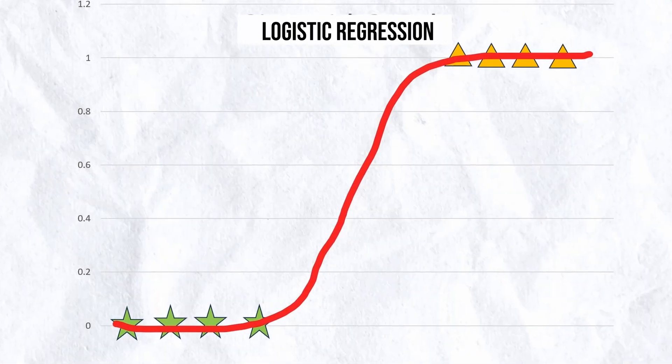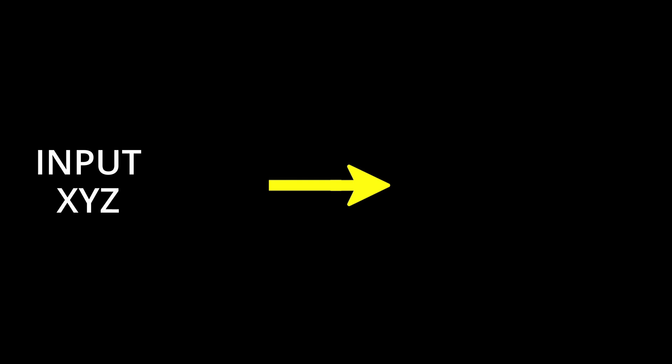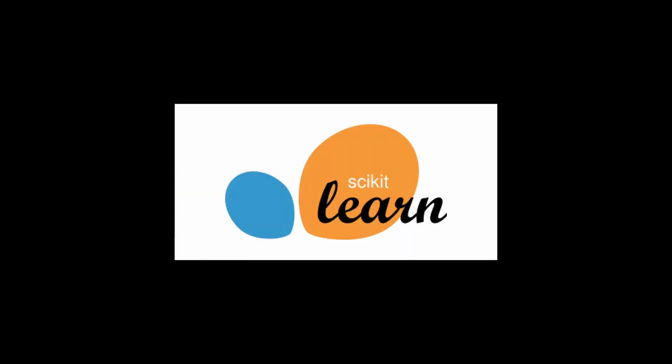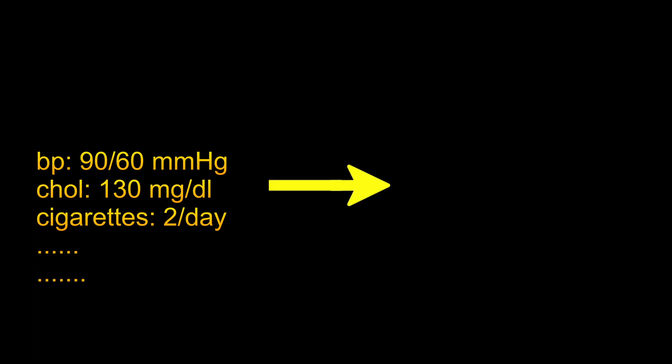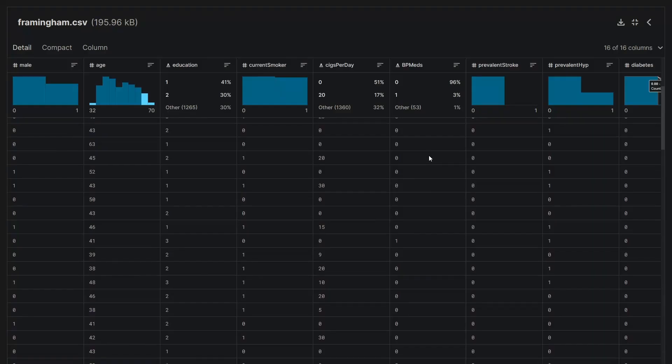Logistic regression is a model used to perform binary classification, categorizing a given input to either 0 or 1. I will be using this model from scikit-learn to predict if a person has heart disease or not.